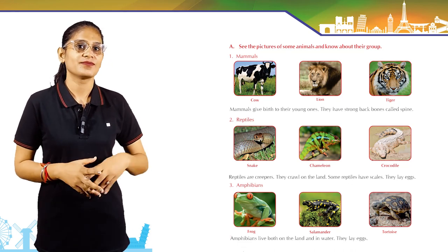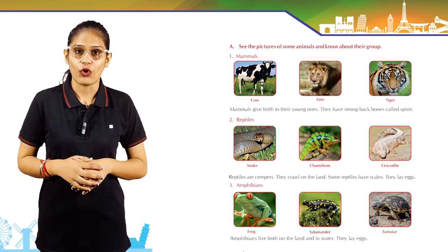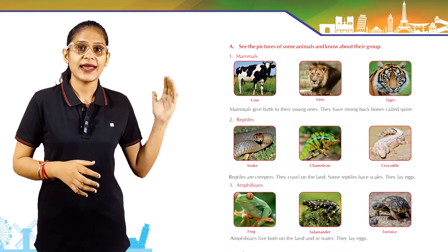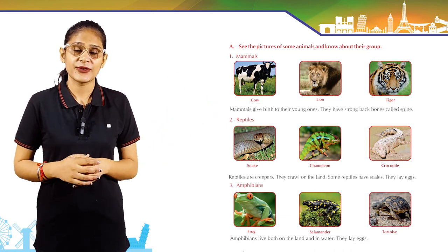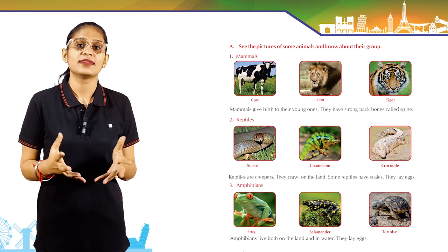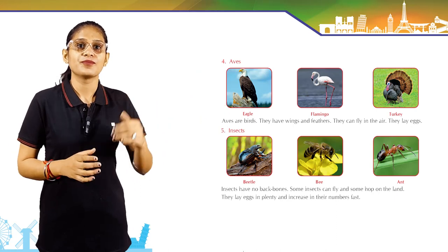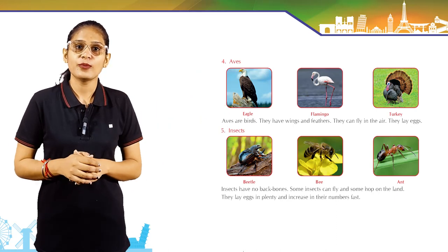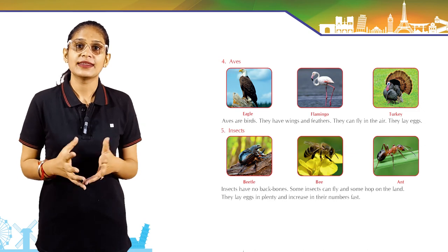Now come to the next group — amphibians: frog, salamander, tortoise. Amphibians live both on the land and in water. They lay eggs. Look at the next group — aves (birds): eagle, flamingo, turkey. Aves are birds; they have wings and feathers.